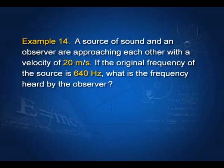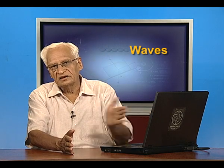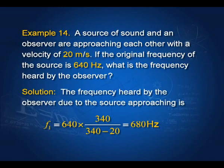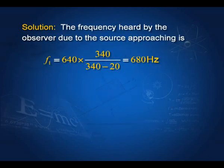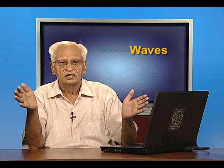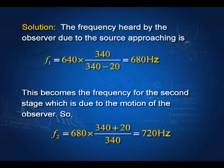A source of sound and an observer approach each other, each at 20 m/s, with original frequency 640 Hz. We handle each motion separately. Source approaching: F₁ equals 640 times 340 by (340 minus 20) = 680 Hz. Then observer approaching: F₂ equals 680 times (340 plus 20) by 340 = 720 Hz. The order does not matter; you get the same result either way.